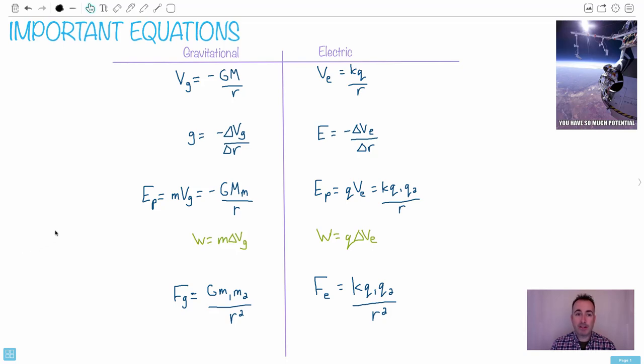There are lots of important equations when we talk about fields. I really like this image here. This is from, do you remember Felix Baumgartner a few years ago with Red Bull? He jumped from extremely high up in a balloon. So he has so much potential, I get it.